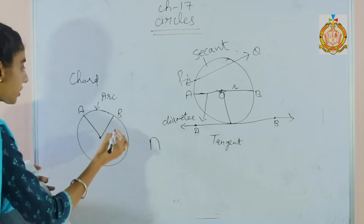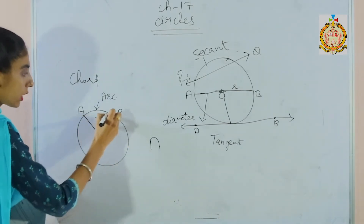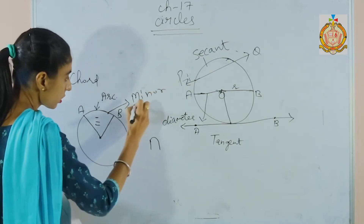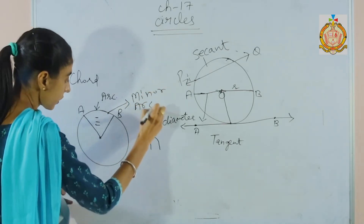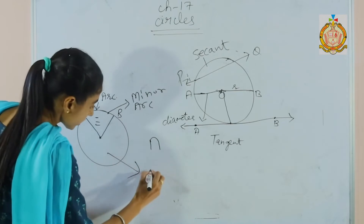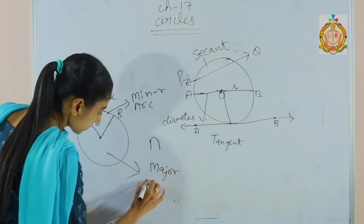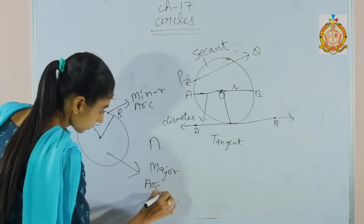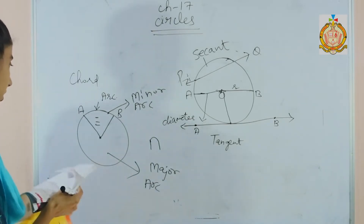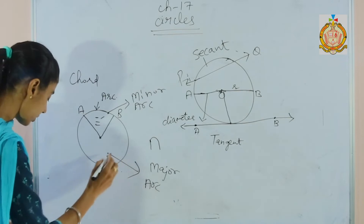Next, minor arc and major arc. The smallest portion is called the minor arc, and the largest portion is called the major arc. This is the minor arc and this is the major arc.